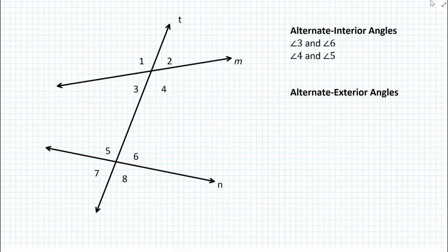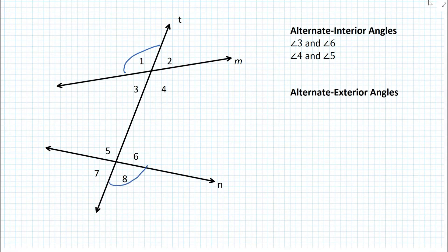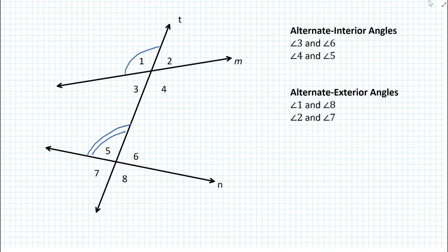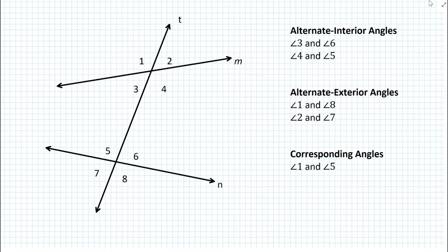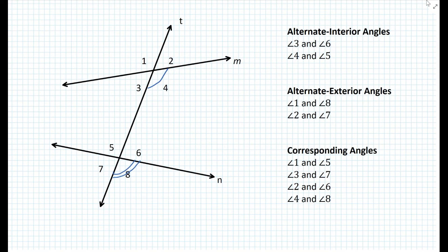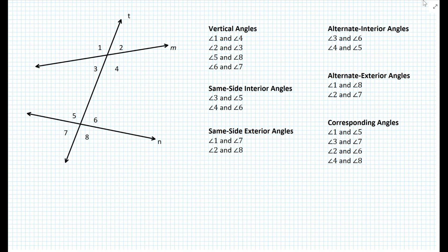Then we have alternate exterior angles. For example, we have angle 1 and angle 8 — these are alternate exterior angles. And angle 2 and 7 are also alternate exterior angles. Well, what's the relationship between angle 1 and 5 in this case? There's also a name for those, and these are called corresponding angles. So how many pairs of corresponding angles do we have? We also have angles 3 and 7 that are corresponding, then angles 2 and 6, and also angles 4 and 8. So now that we have covered all the names of these angles, let's look at the properties of when lines M and N become parallel.